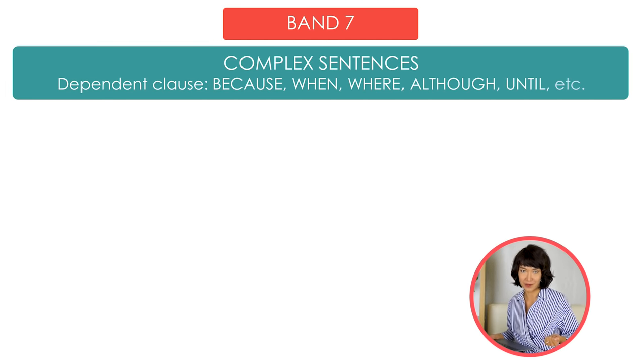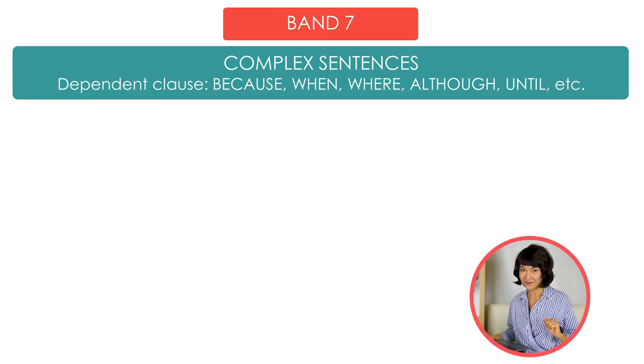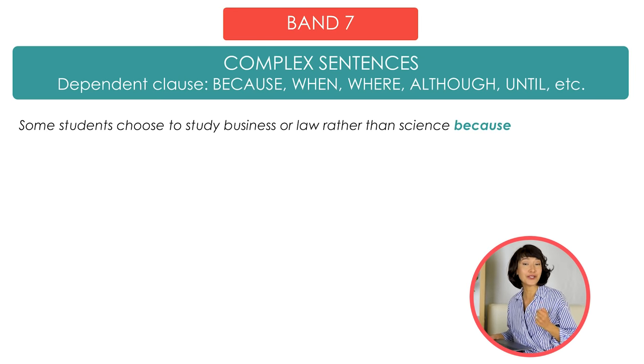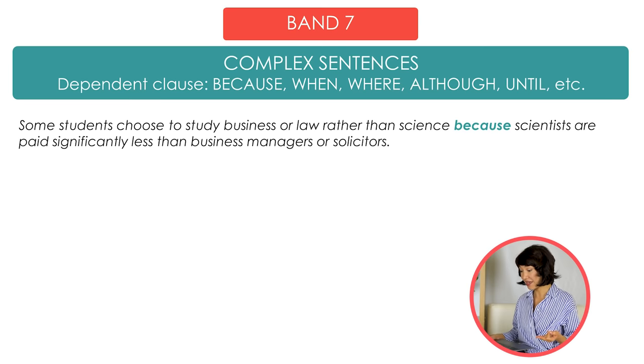But let's talk about the band 7 level sentences. Some sentences in English are called complex. To turn our sentence into a complex one, we need to add another sentence — the dependent clause — using linking words like because, when, where, although, until, or some others. Please try to write your complex sentences and post them in the comments below. For example, we take our sentence: 'Some students choose to study business or law rather than science,' and then we want to give the reason — why? Because? I decided to say: 'because scientists are paid significantly less than business managers or solicitors.' Solicitors are a type of lawyer.